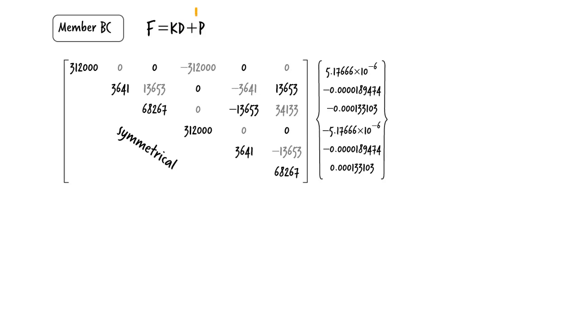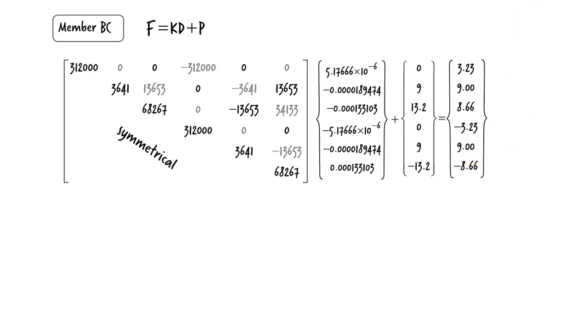For BC, we have the calculation. Here our equation has an additional term, Vector P. This is the vector of fixed end forces due to the applied loads. We computed it previously. The resulting member end force vector is shown. And here is the free body diagram for the member.